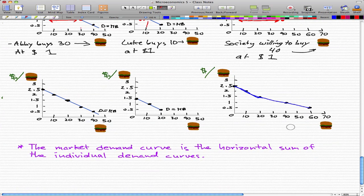The market demand curve, which is this, is the horizontal sum of the individual demand curves. And that's the process that we just went through. We added up the horizontal sum of the individual demand curves to get the market demand curve. And that's all I want to teach you in this video.